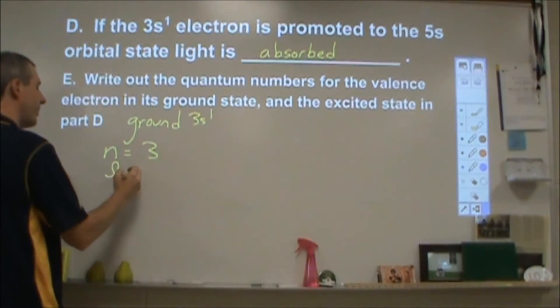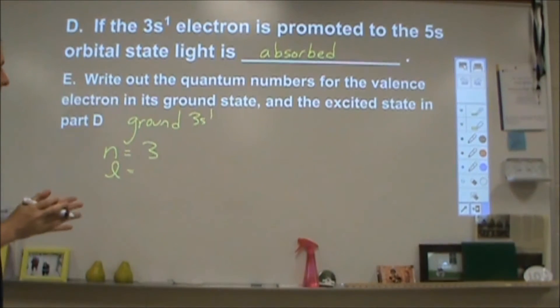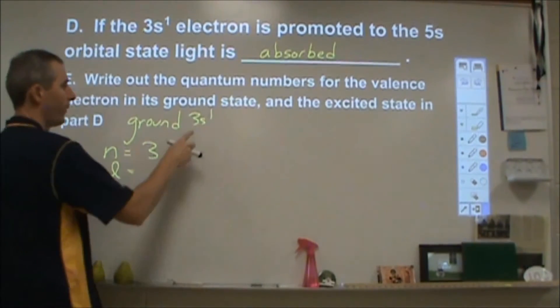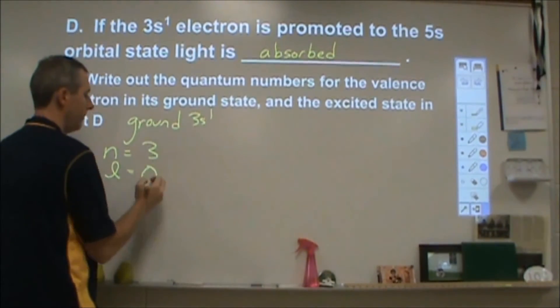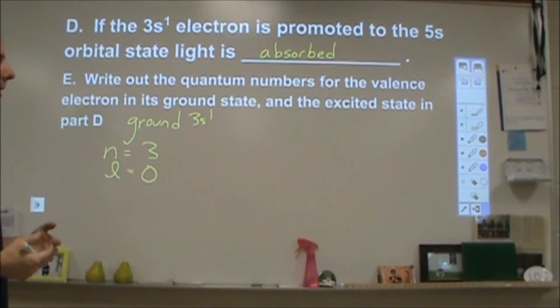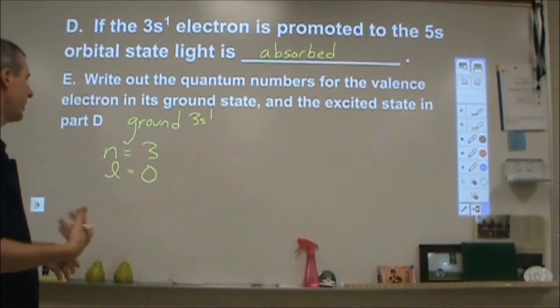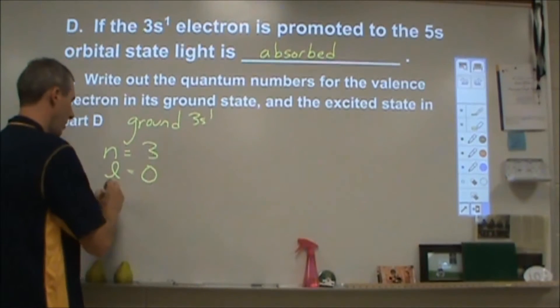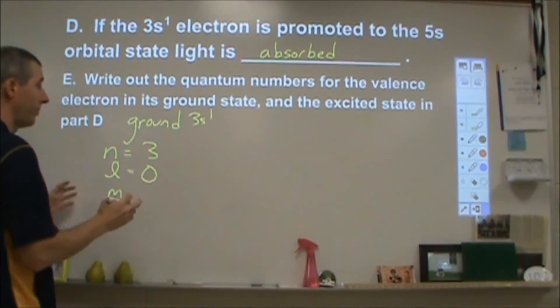The l is your angular quantum number, and this is what type of orbital that we're describing this electron with. So for an s orbital, l is 0. For a p orbital, l is 1, d is 2, f is 3, g is 4, and so on.